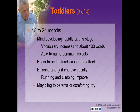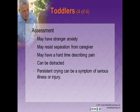From 18 to 24 months, the toddler's mind is developing rapidly. Vocabulary increases from 10-15 words to about 100 words. They can name common objects and begin to understand cause and effect. Balance and gait improve rapidly, as do running and climbing. Toddlers tend to cling to parents and often have comforting objects. For toddler assessment: they have stranger anxiety and may resist separation. Allow them to hold special objects for comfort. They can be hard to restrain and have difficulty describing pain. Persistent crying or irritability can be a symptom of serious illness or injury.